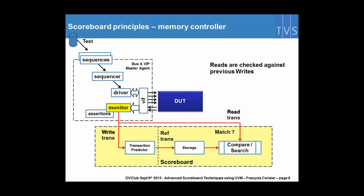We split the write and the read transactions from the same monitor and we make different actions to the scoreboard. The writes are sent to the predictors to get the reference transactions, then are stored, and then we compare the reads.